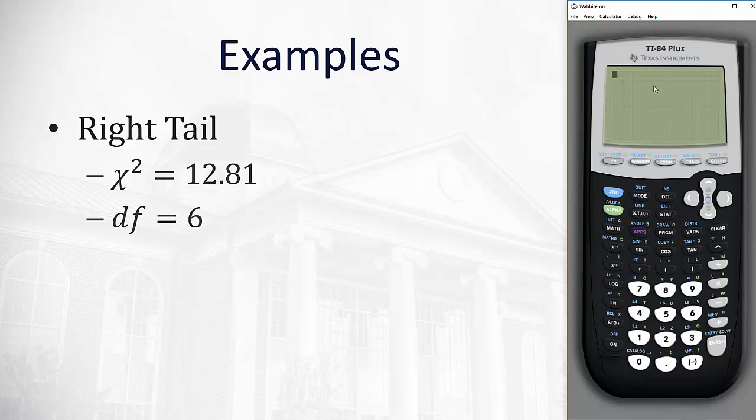Example: If we are doing a right-tailed test where χ² is calculated to be 12.81 and the degrees of freedom are 6.